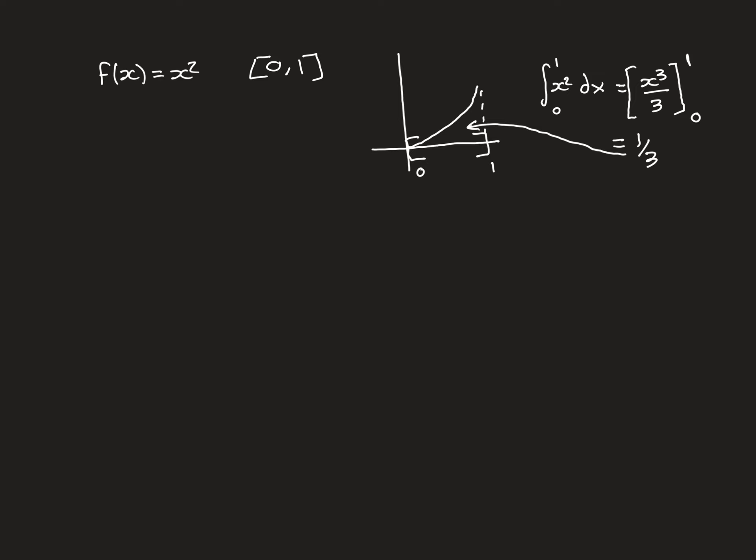What we now want to do is formally show that x squared is Riemann-integrable on the interval [0, 1] and find the value of the Riemann-integral. If it's going to be Riemann-integrable, we need to show that the supremum of the lower Riemann sums is equal to the infimum of the upper Riemann sums, and we need to find that value — we're hoping it's going to come out as 1/3. We're going to do this by considering a good choice of dissection.